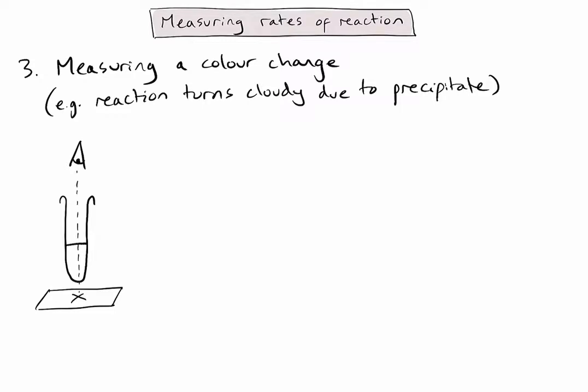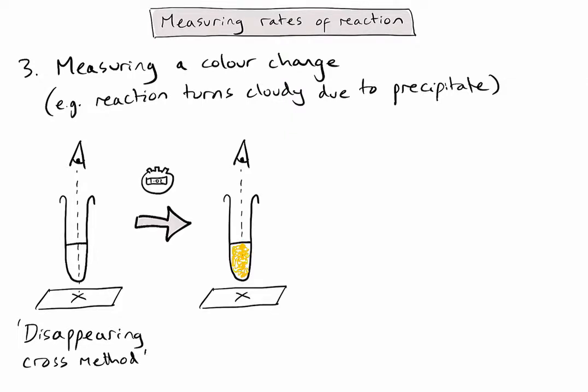This is known as the disappearing cross method. In this example, instead of taking a number of measurements over a time, we are simply waiting for that cross to disappear from our eyesight. You'll notice that because this reaction has produced tiny bits of solid in the solution, I can no longer see the cross.